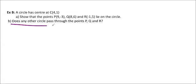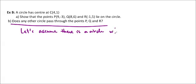I wanted to talk about how we could prove that no other circle passes through P, Q, and R using algebra. I'm going to assume that you already watched example B part A and go ahead with part B right now. So basically we want to assume that there is a circle with center not 4,1 passes through P, Q, and R.